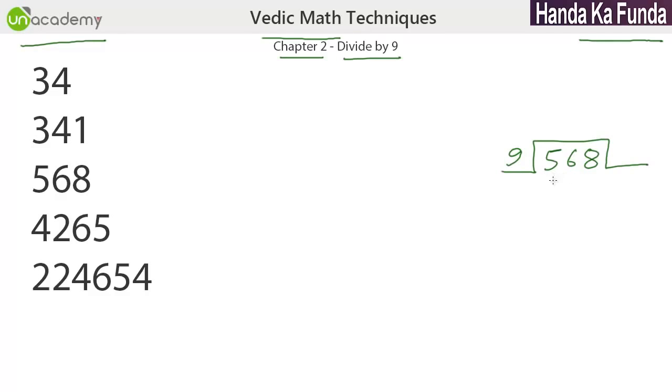They'll write a 9 here. Think of a multiple of 9 which is just below 56. 54 would fit because 9 into 6 is 54. And now, when you subtract it, you are left with 2. Then, you bring down this 8.